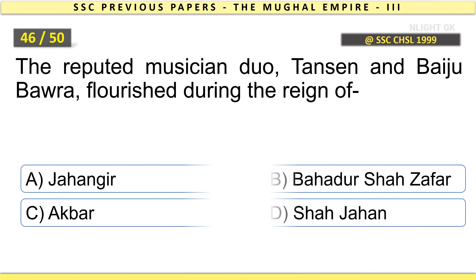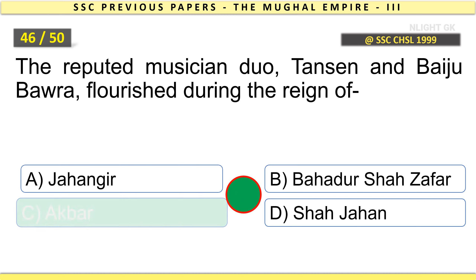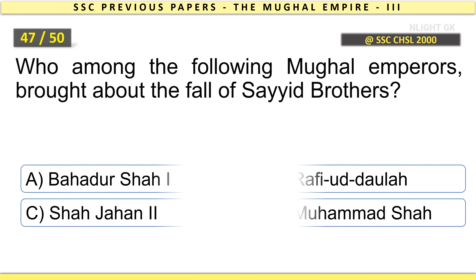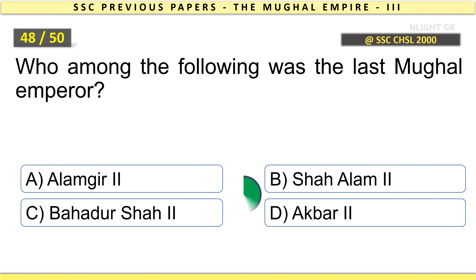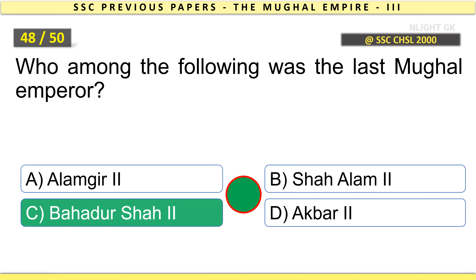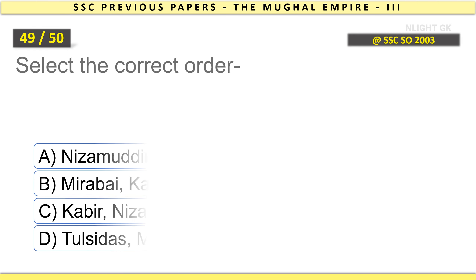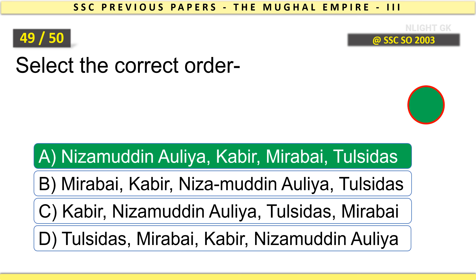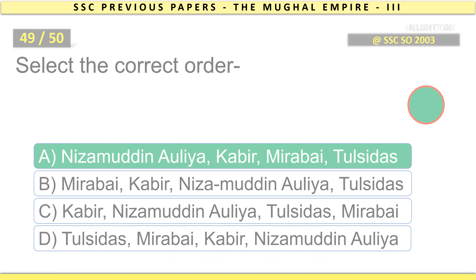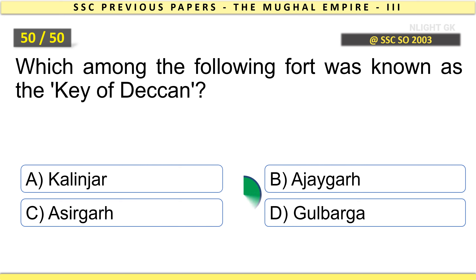The reputed musician duo Tansen and Baiju Bawra flourished during the reign of Akbar. Select the correct order: Nizamuddin Aulia, Kabir, Mirabai, Tulsidas. Which among the following forts was known as the Key of Deccan? Asirgarh.